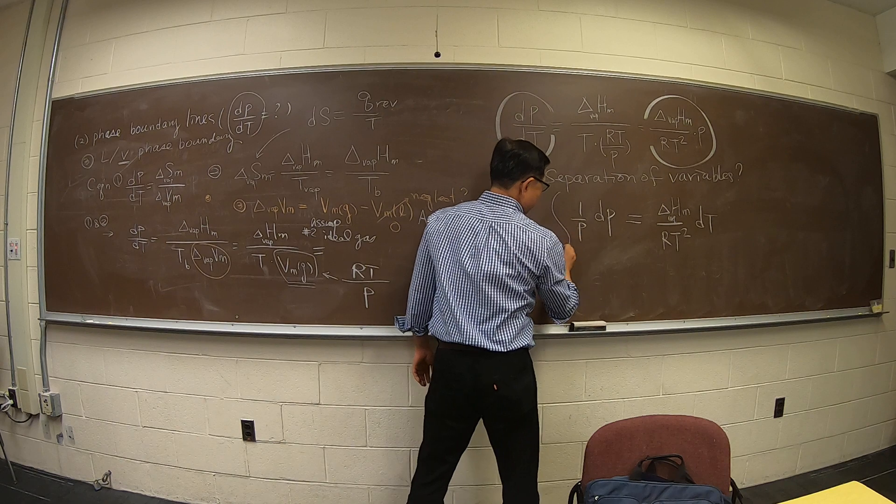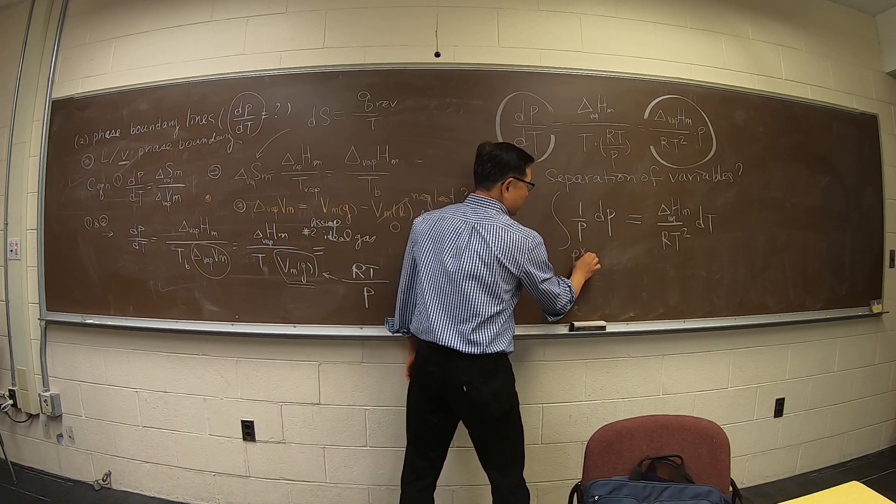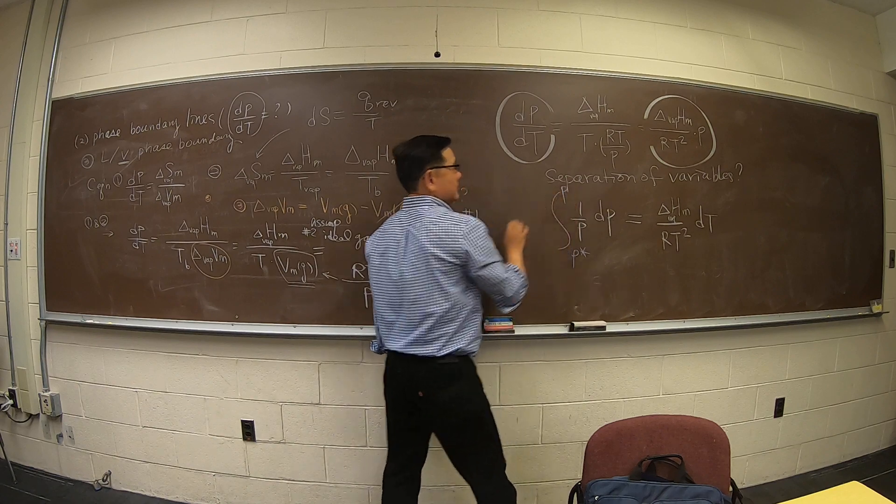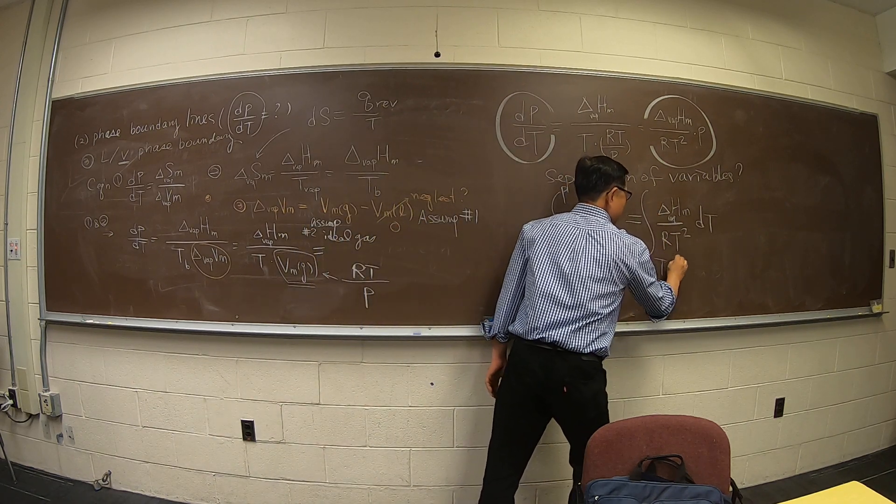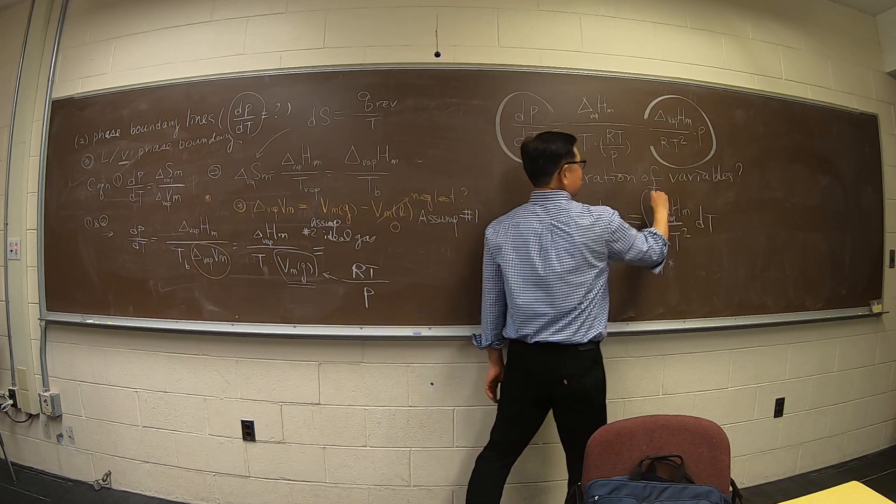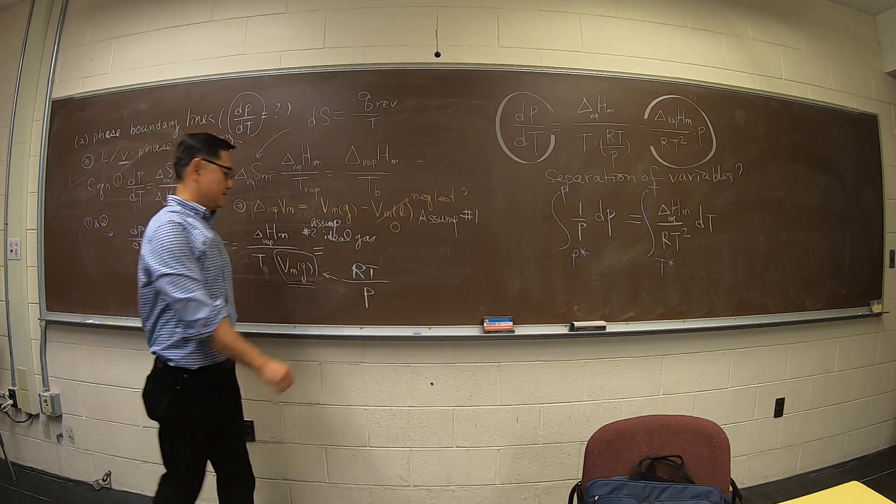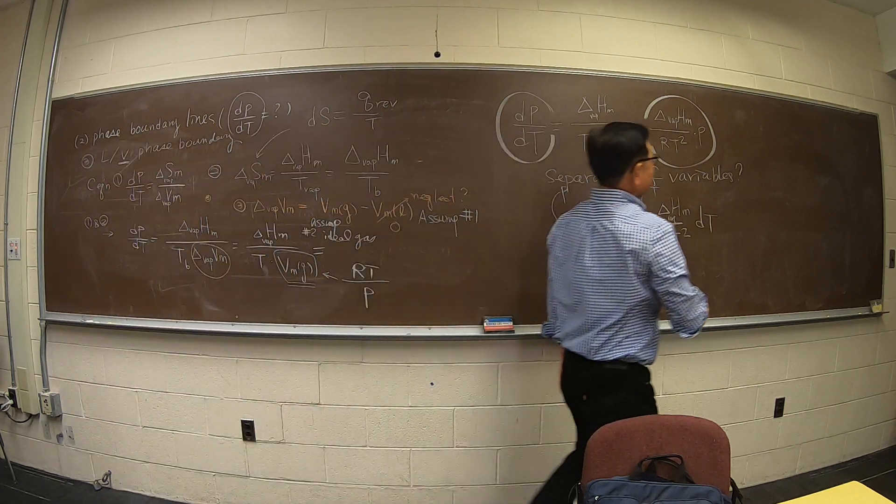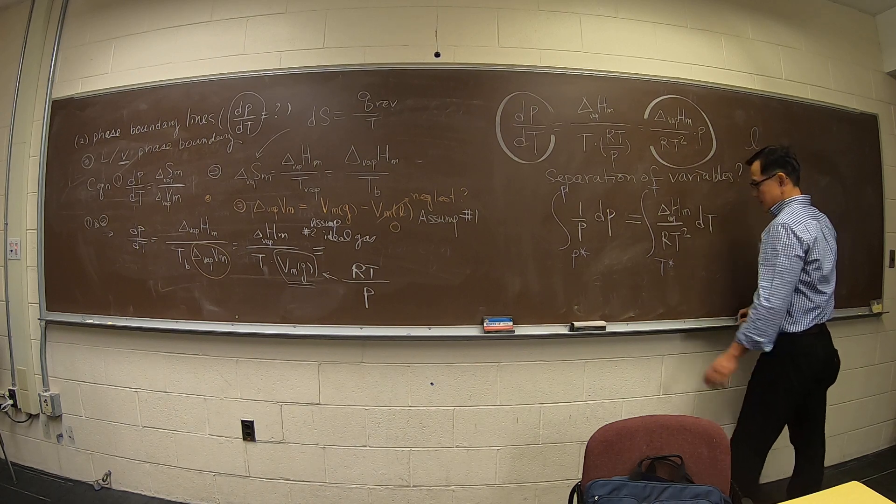We are going to use pressure—this is a vapor pressure P* to P. When you have P* which is a reference temperature to any other temperature, I can do that. And then finally I'm going to write it in a big form this way.